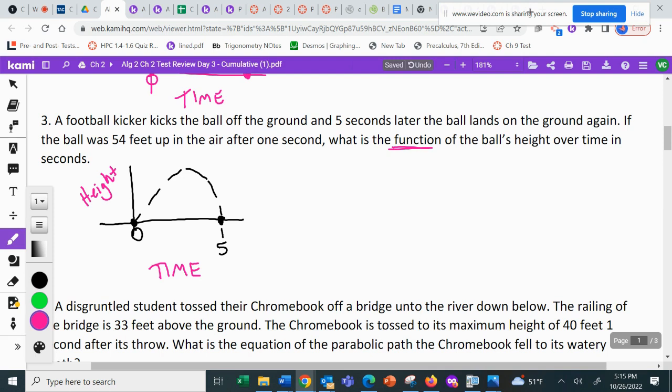But at time one, they tell me it's 54 feet. Now, one is definitely not in the exact middle of one and five, sorry, zero and five. So that cannot be the vertex. That's got to be some given point somewhere on the graph.